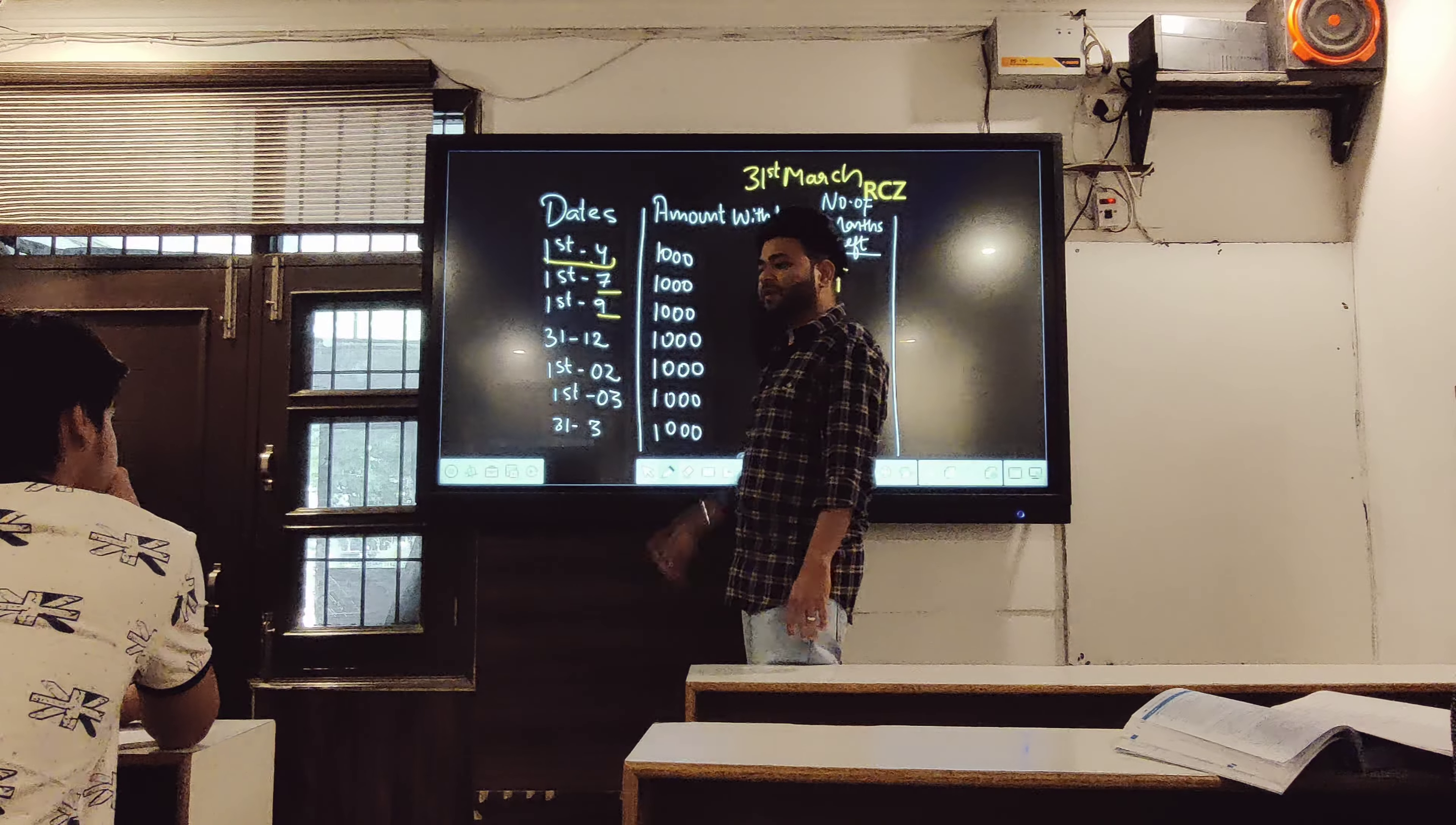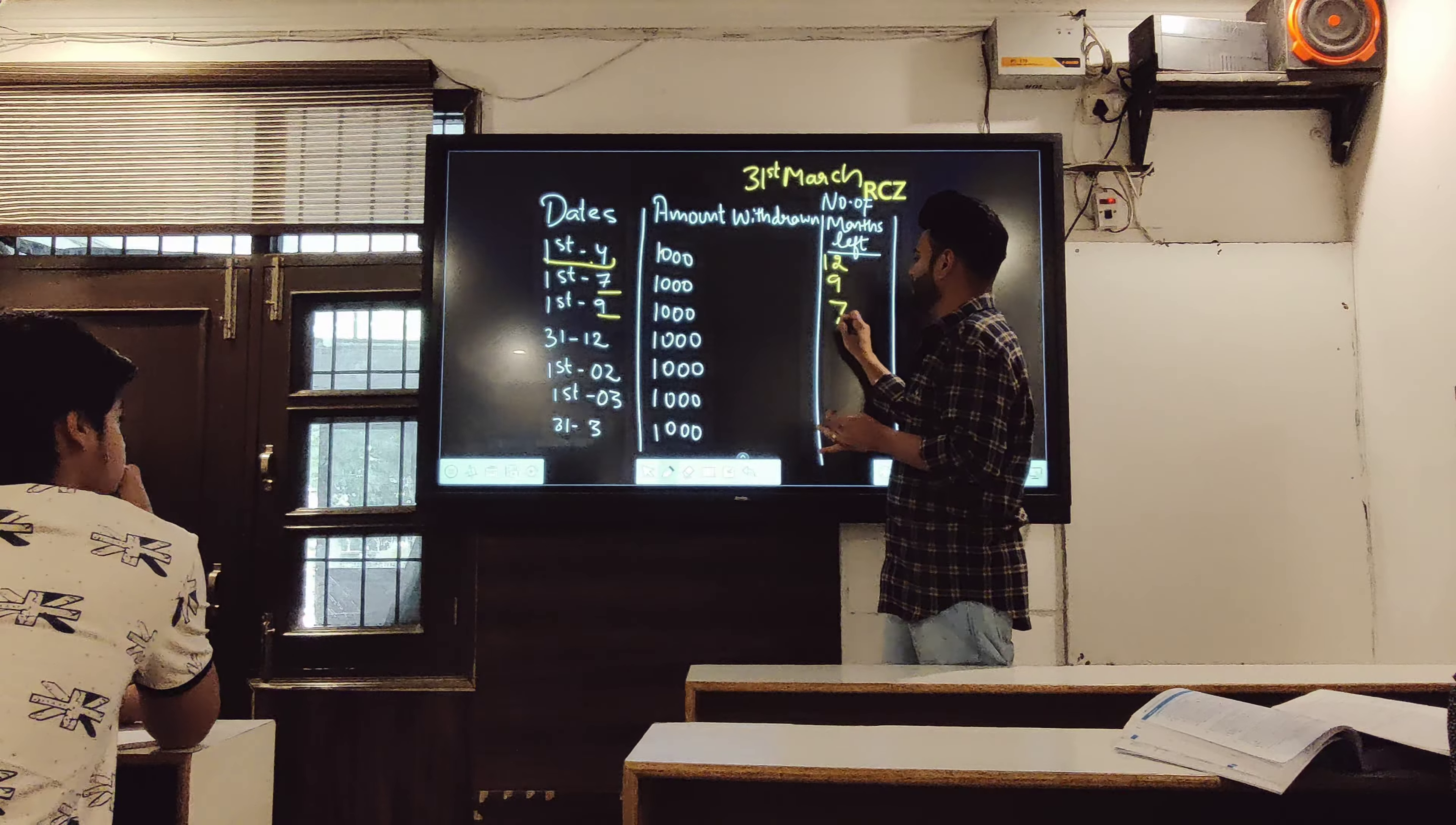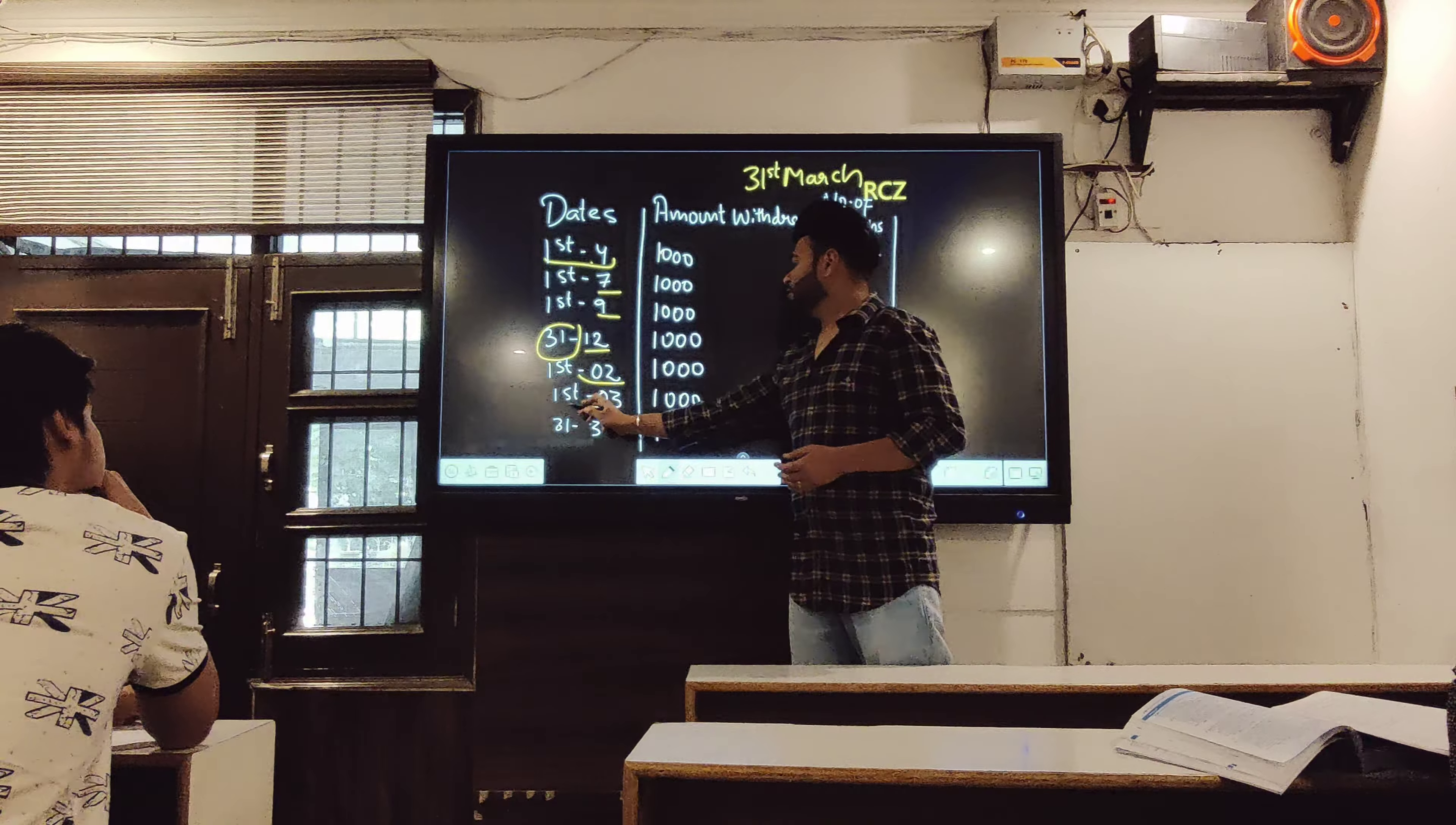Now third column you will make, number of months left. This left means, our books close on 31st March. So we start from this date and go till 31st March. April to March, how many months? Full 12 months.